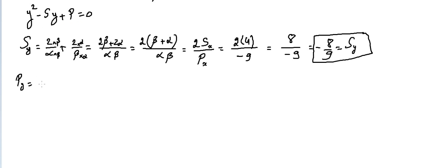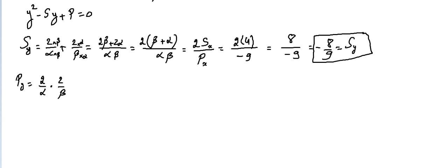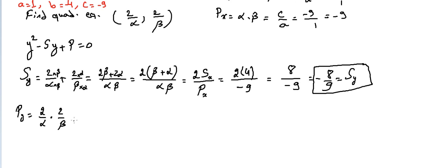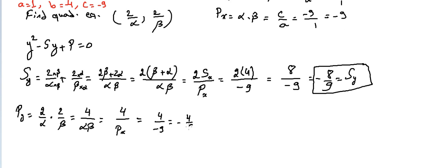We still need to find the product of the y equation. The roots are two over alpha and two over beta. Multiplying them: two times two over alpha times beta equals four over alpha beta. The product of roots in x is minus nine, so the product in y is four over minus nine, which is minus four over nine.